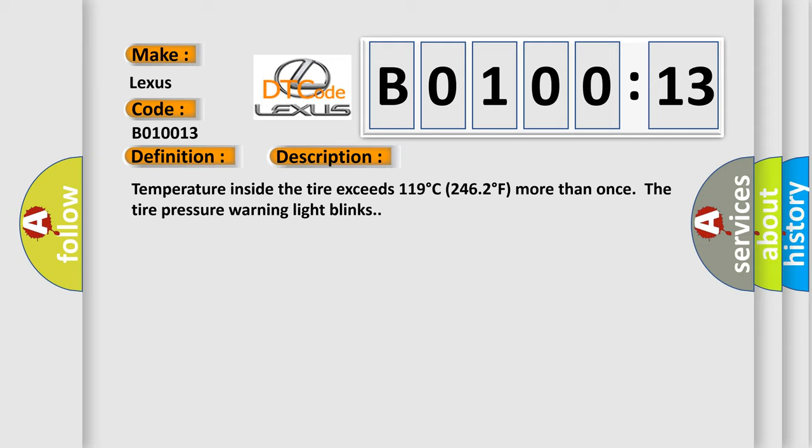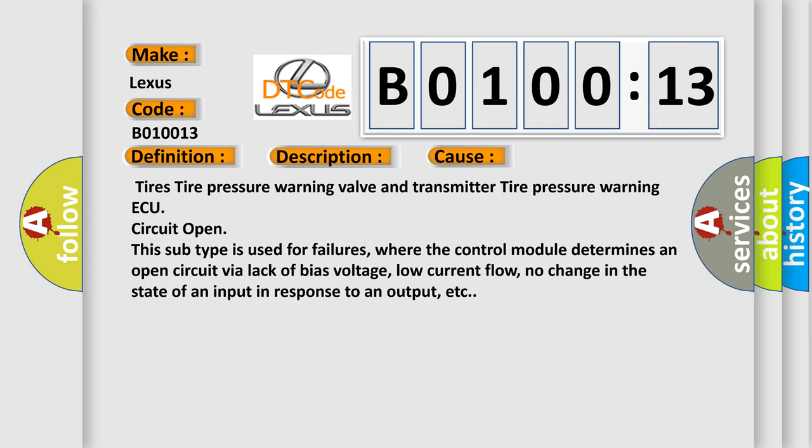This diagnostic error occurs most often in these cases: Tires, Tire pressure warning valve and transmitter, tire pressure warning ECU circuit open. This subtype is used for failures where the control module determines an open circuit via lack of bias voltage, low current flow, no change in the state of an input in response to an output, etc.